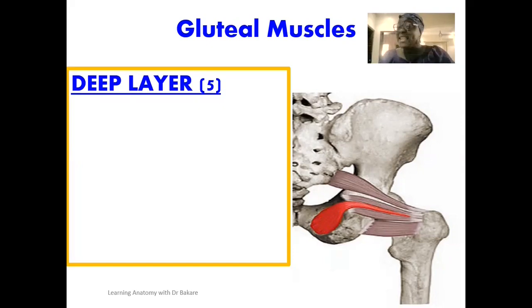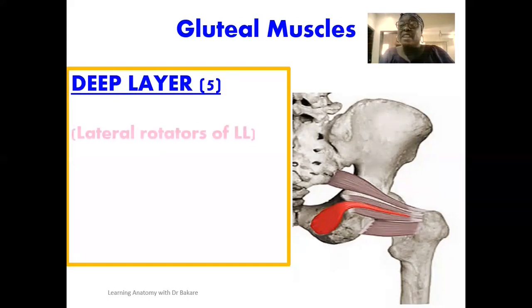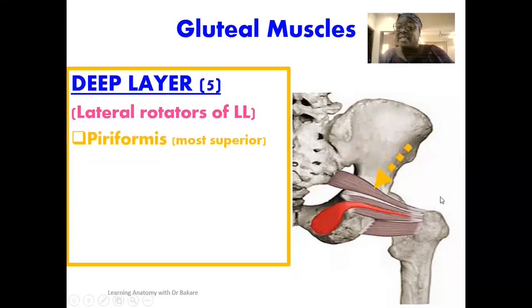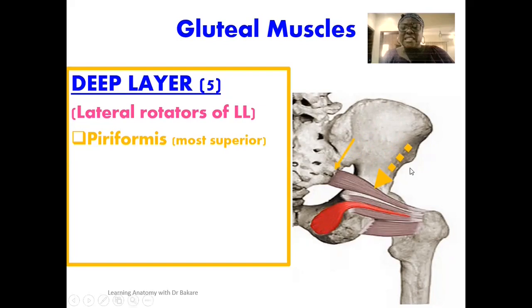The deep layer of gluteal muscles is embedded deep within the gluteal region and is made up of five muscles responsible for lateral rotation of the lower limb. The first muscle is the piriformis, highlighted in yellow — the most superiorly placed of the deep layer muscles. The piriformis originates from the anterior lateral surface of the sacrum, with its fibers directed through the greater sciatic foramen.